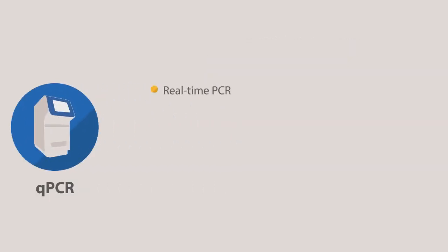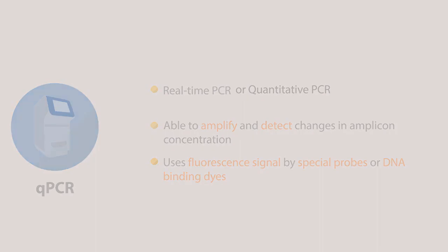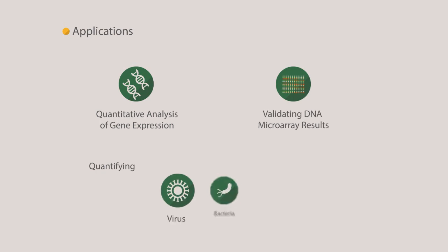qPCR, also known as real-time PCR or quantitative PCR, is a technique that is able to amplify and detect changes in the amplicon concentration. qPCR collects data during amplification by using fluorescent signals emitted by special probes or DNA binding dyes. Over the years, qPCR has been utilized for many applications. It is mostly used for quantitative analysis of gene expression, validating DNA microarray results, and quantifying viral, bacterial, or fungal loads, just to name a few.